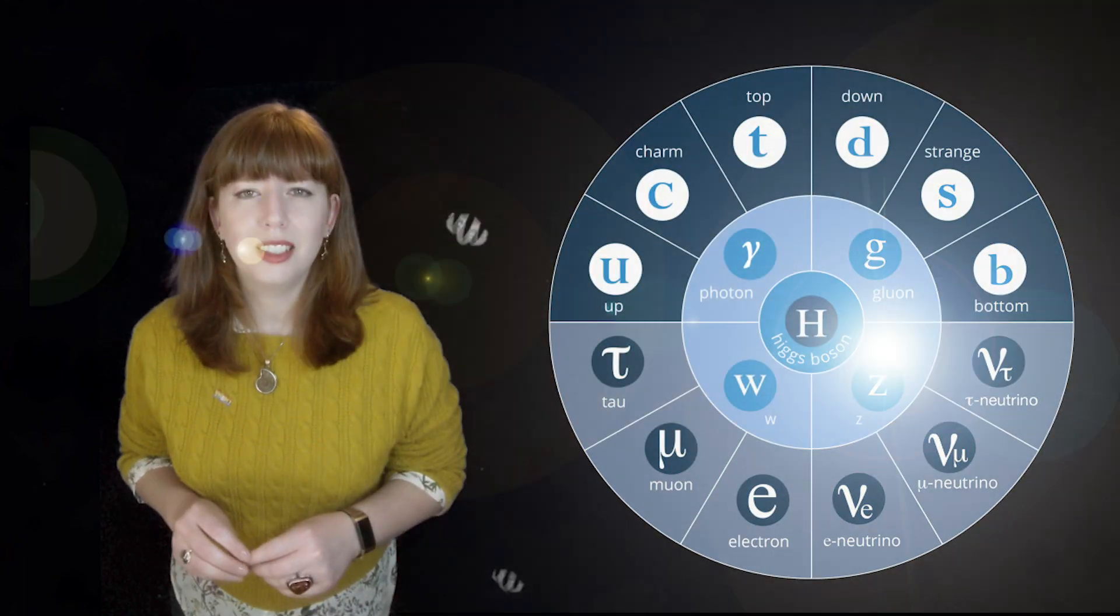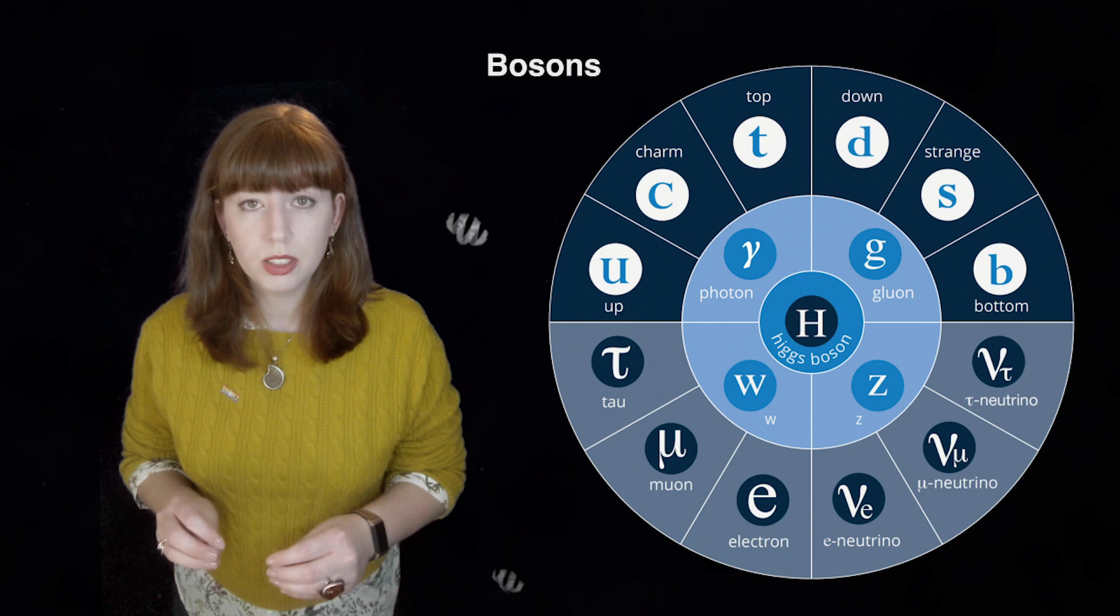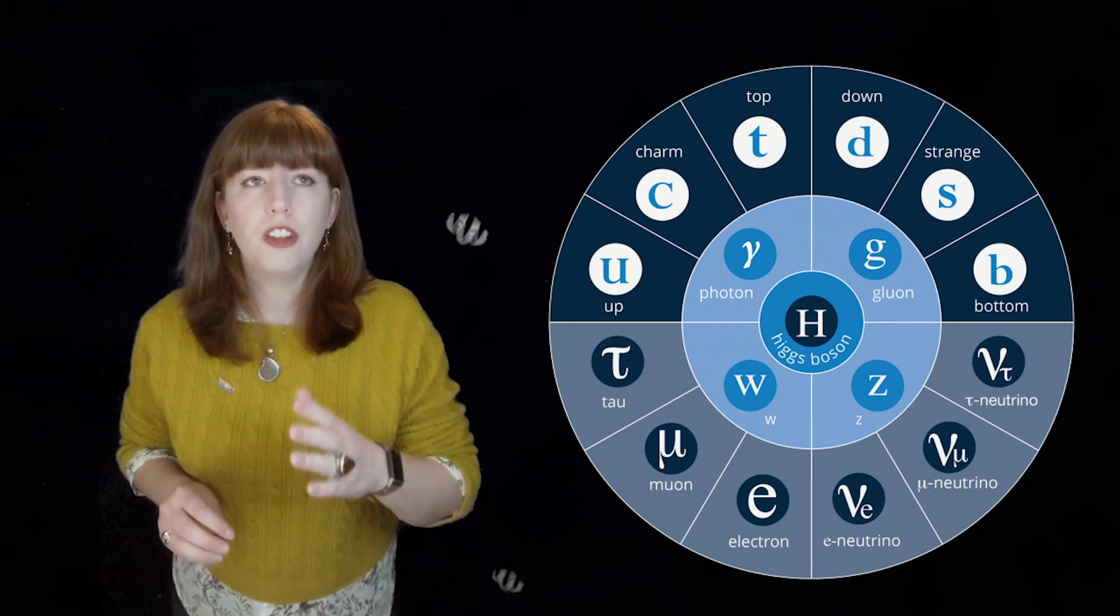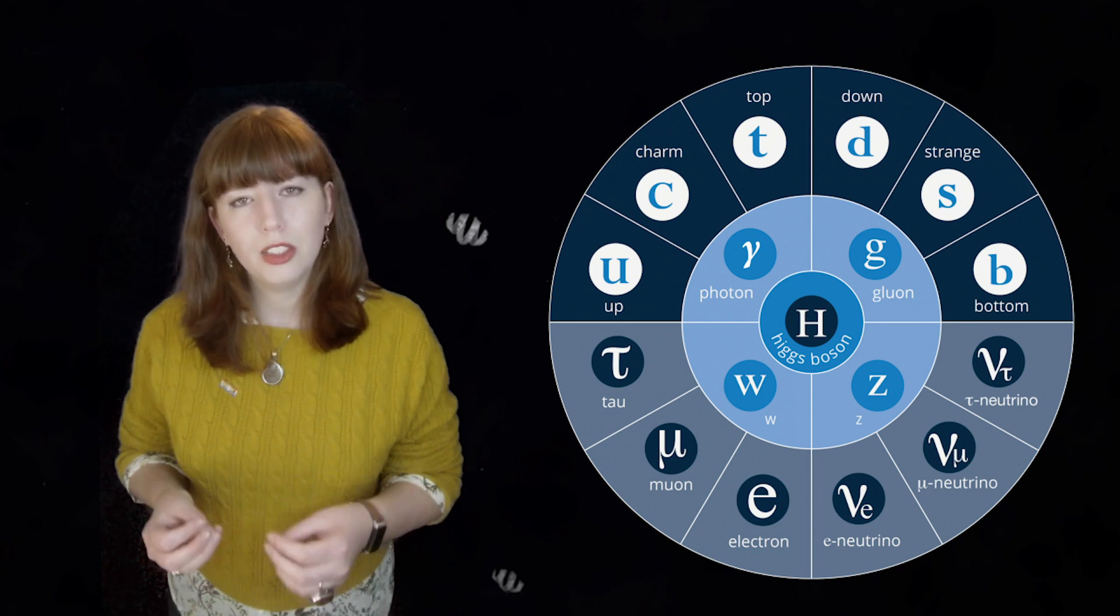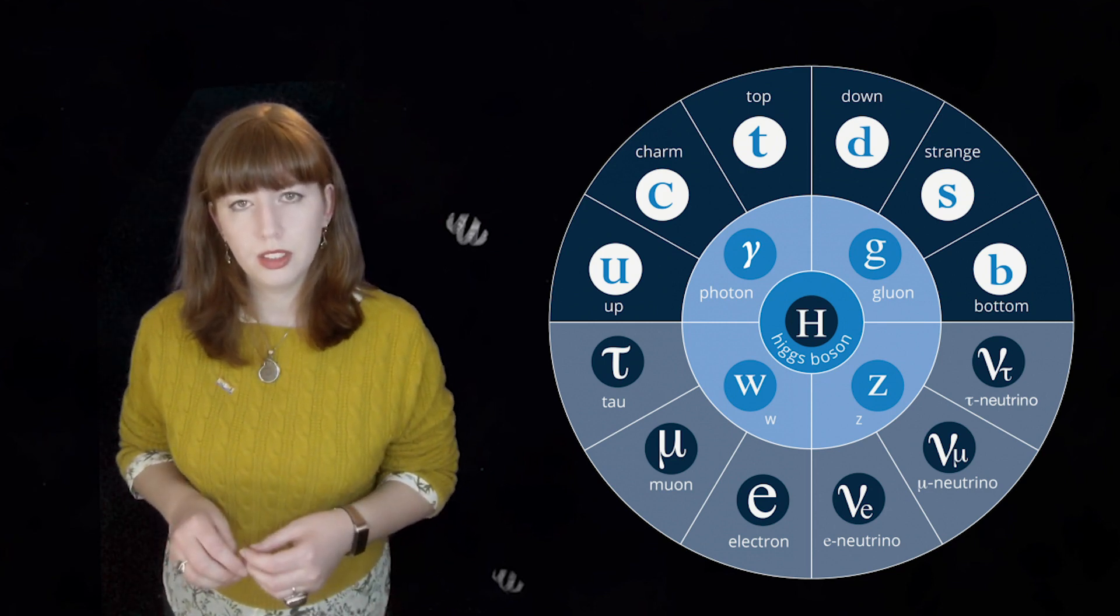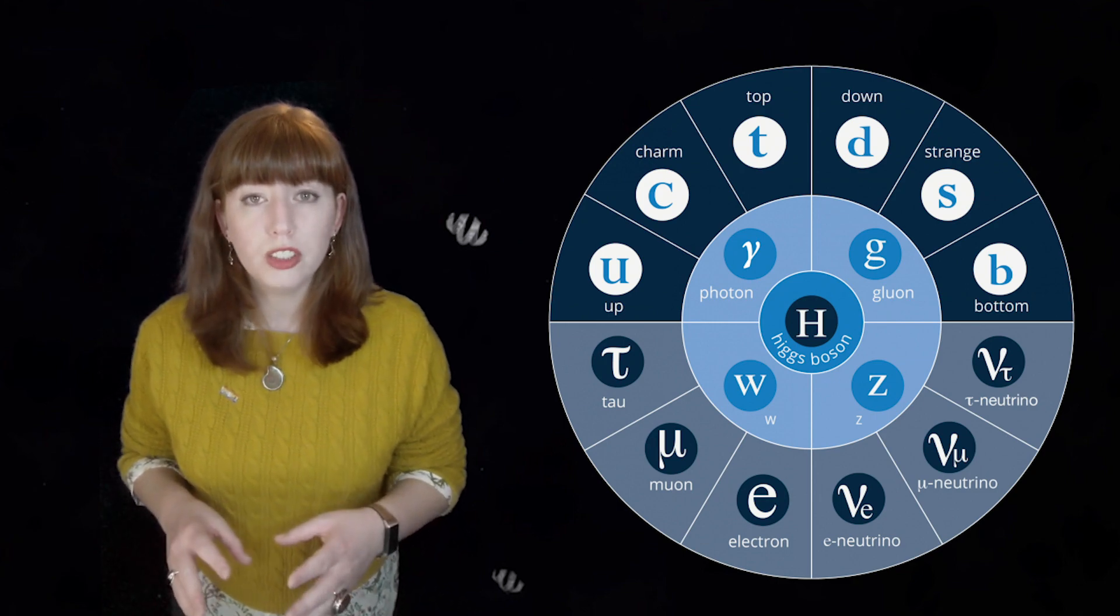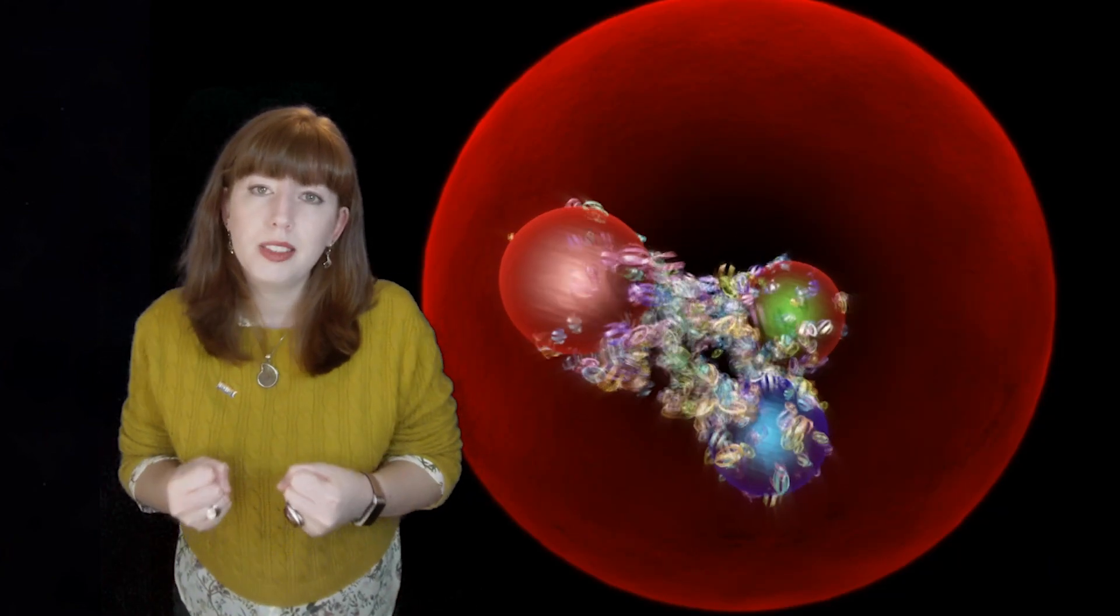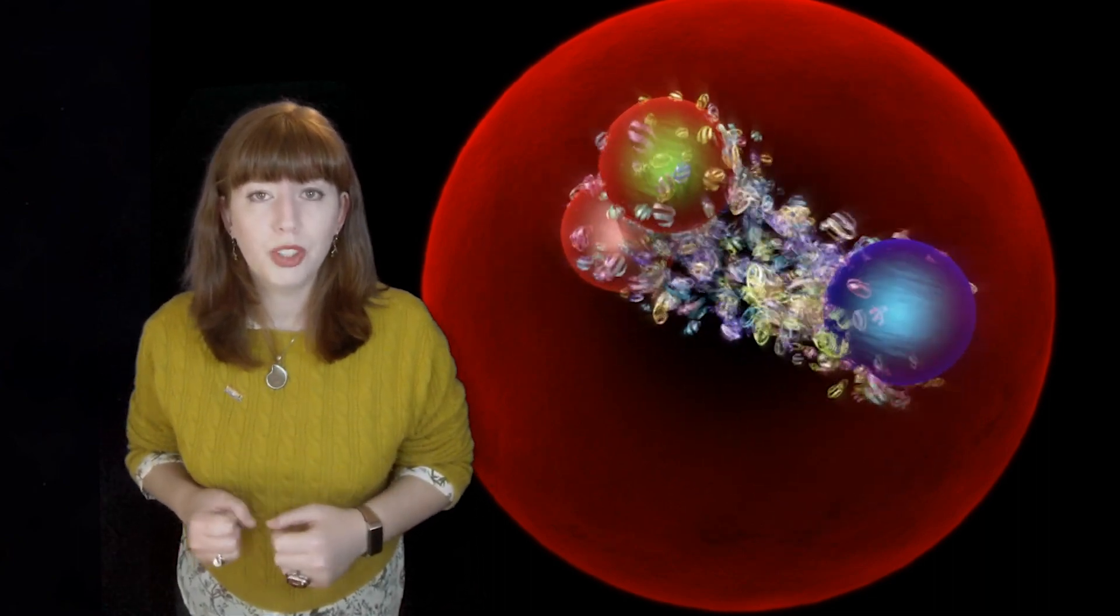In the centre, we have the force particles, the bosons. We have the photon, which is the particle of light, and this propagates the electromagnetic force. We also have the gluon from the strong force, and this binds particles together, like the quarks inside the proton and neutron.